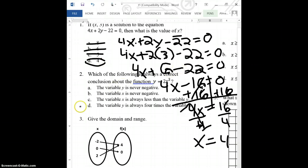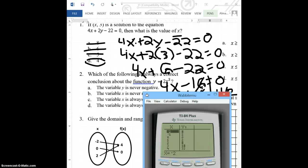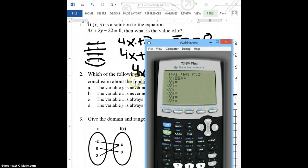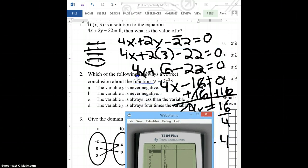Which of the following is always a correct conclusion about the function y equals 2x squared? Okay, so to figure this out, I need to look at a table. And I'm going to be lazy, I'm just going to grab my calculator. And I am going to go to y equals. And y equals, I'm going to put 2x squared. And I'm just going to look at my table values. So I'm going to press 2nd, graph. And I'm just going to go through my answer choices.